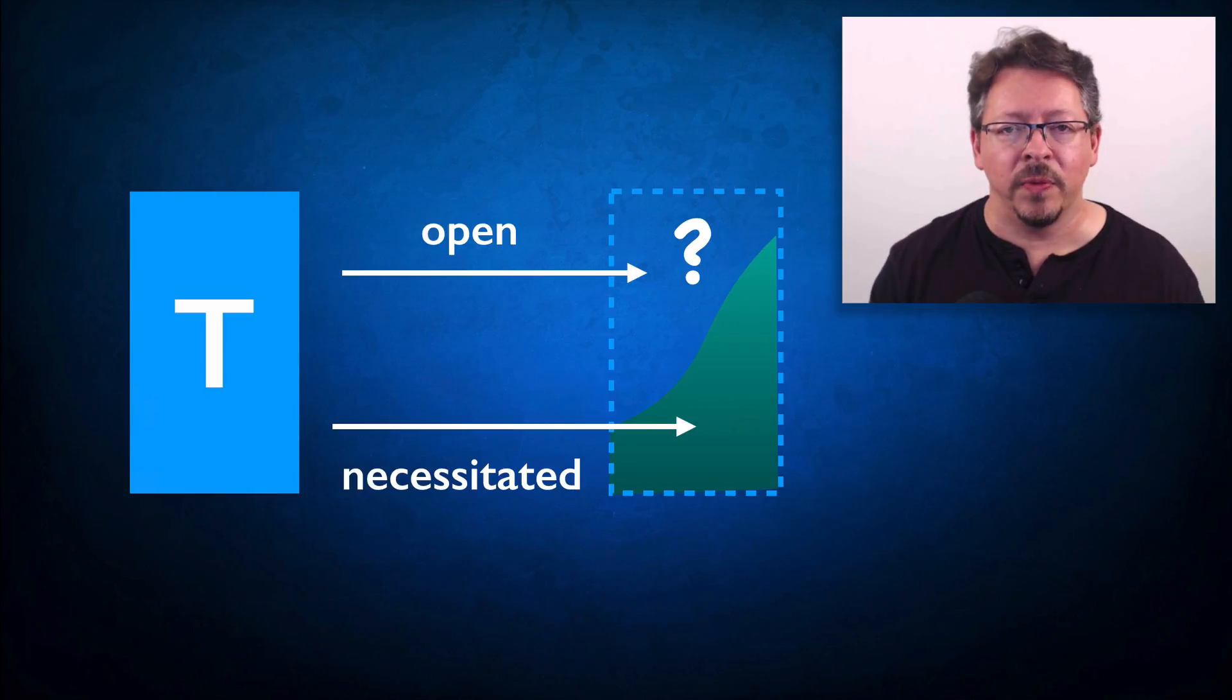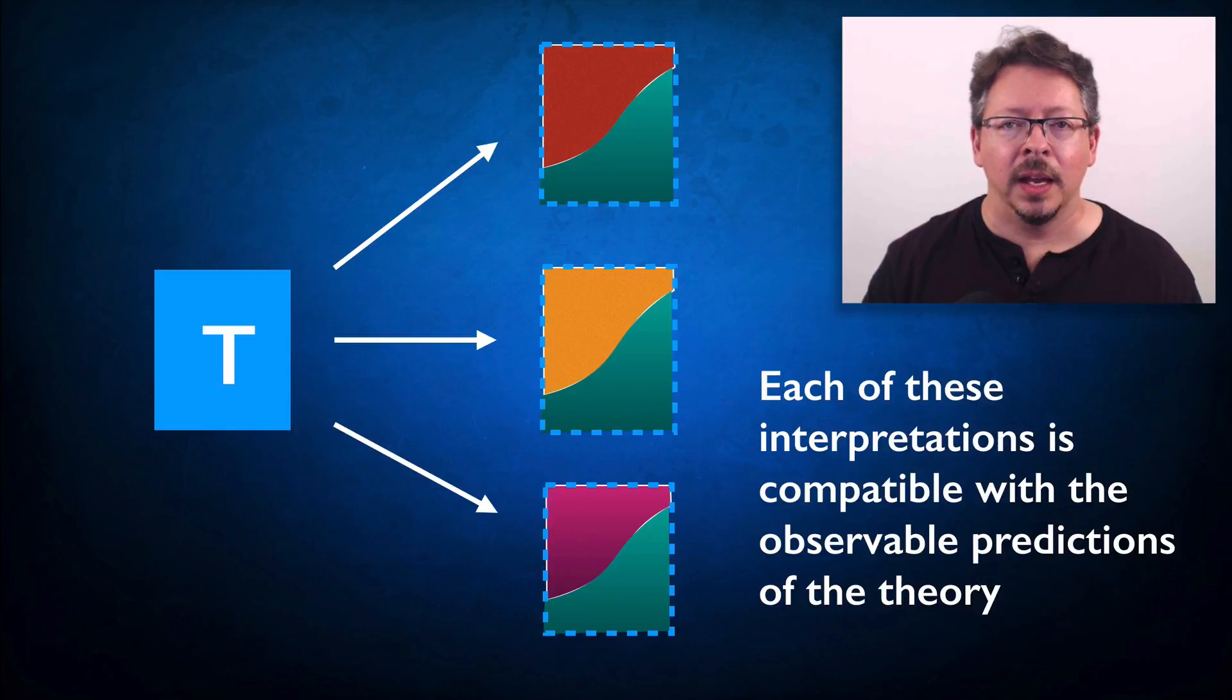This leaves room for multiple descriptions of the world that could fill in the holes in different ways. In fact, it's almost always the case that a theory will allow for multiple interpretations. The parts that are necessitated by the theory will be shared, but the parts that are not necessitated may differ.